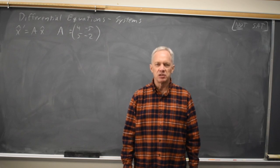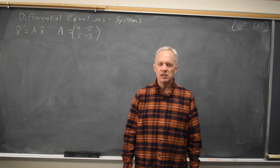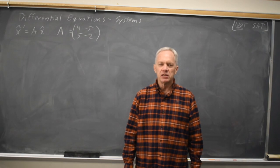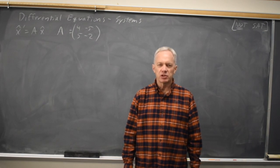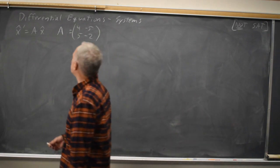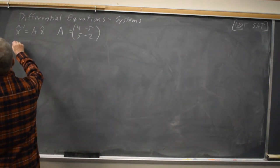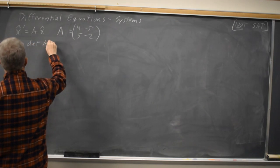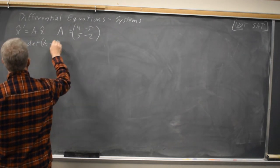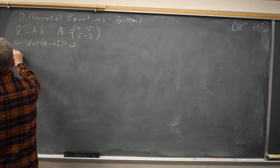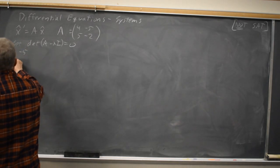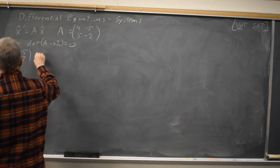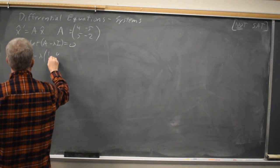This system has complex eigenvalues, so we'll look at the trajectories in the phase plane for complex eigenvalues. To find the eigenvalues, set determinant of A minus lambda times identity equal to 0. So that's 4, negative 5, 5, negative 2, minus lambda times 1, 0, 0, 1.